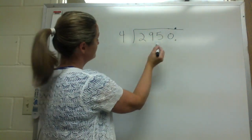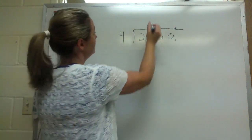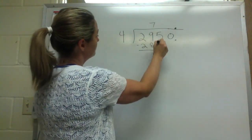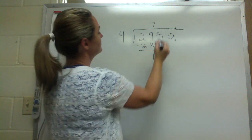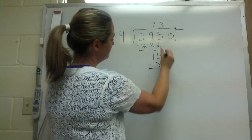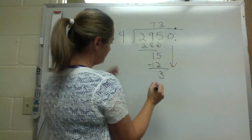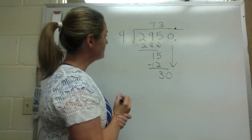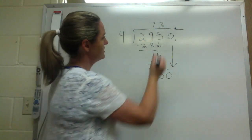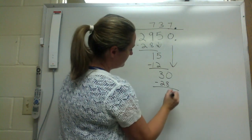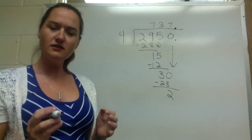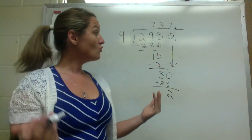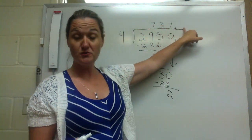Four goes into 2 — nope. Four goes into 29 — well, four times seven is 28, so I'm guessing seven. Five down — four goes into 15: four times three is 12, so put three there, minus 12, three. Now bring this zero down — four goes into 30: four times seven is 28, so we'll put another seven there, minus 28, gives us two. Now that we're working with decimals, we no longer have remainders — remainders are not allowed. So I need to keep going.